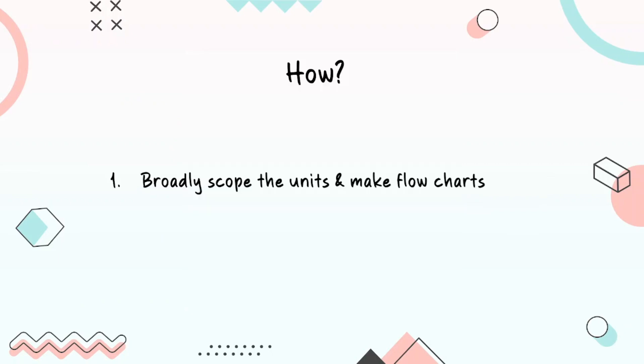Starting off with the first tip: broadly scope the units and make flow charts. What I mean by that is there's like 600 muscles in the body and you are required to remember every single one of them. What worked for me was dividing the muscles into different compartments and then studying it compartment-wise.